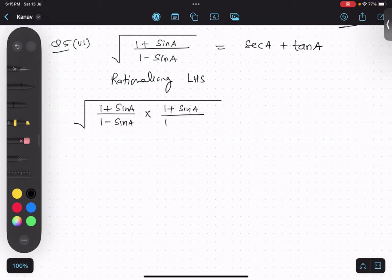If we look at the numerator, it is exactly the same, so I can write one plus sine A whole squared. And denominator is A square minus B square. Now numerator root will get cancelled because it's a whole root.